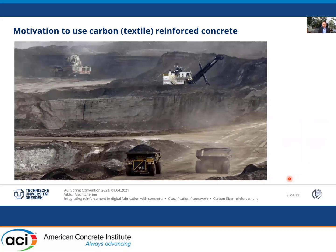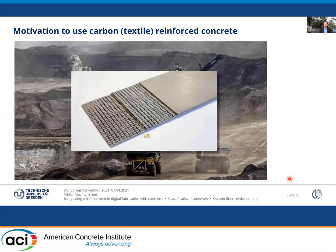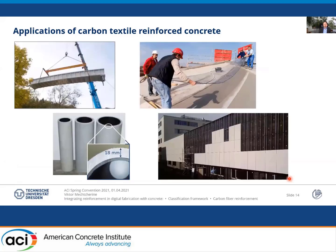Now I come to carbon reinforcement and why we are interested in it. First, sustainability: conventional construction is mass construction with massive resource use. With carbon reinforced concrete, we can save a lot of cement and aggregates by using much slenderer elements, since carbon reinforcement has higher tensile strength and does not need protection against corrosion — it is absolutely inert. Examples include strengthening applications and slender structural elements.